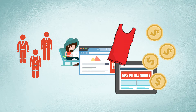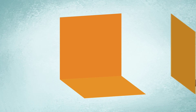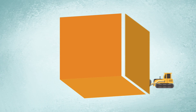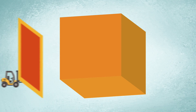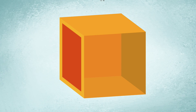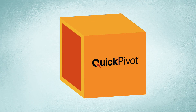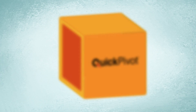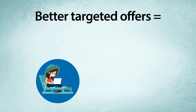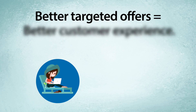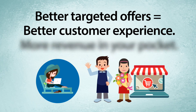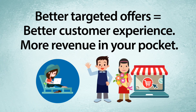Getting started is faster and easier than you think. Implementation can typically be completed in under six weeks, leaving two weeks for testing and final touch-ups to your data. You'll be creating better segments in under two months. Better targeted offers means better customer experiences and more revenue in your pocket.